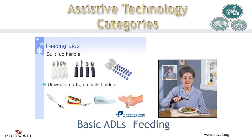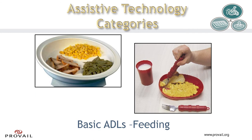Here we see several adapted feeding aids. There are many different types of adapted silverware that have been modified with long handles, built-up handles made out of different materials, and some with different weights. There is another example of one with the universal cuff so it can be held without having a functional grasp. There are even models that help to accommodate for tremors in the hands. Here we can see a couple styles of adapted feeding bowls and plates that have built-up edges or lips so that you can push the spoon or fork up against the side and get the food onto the silverware more easily. These items will typically also have a non-slip coating on the bottom to keep the bowl or plate in place.